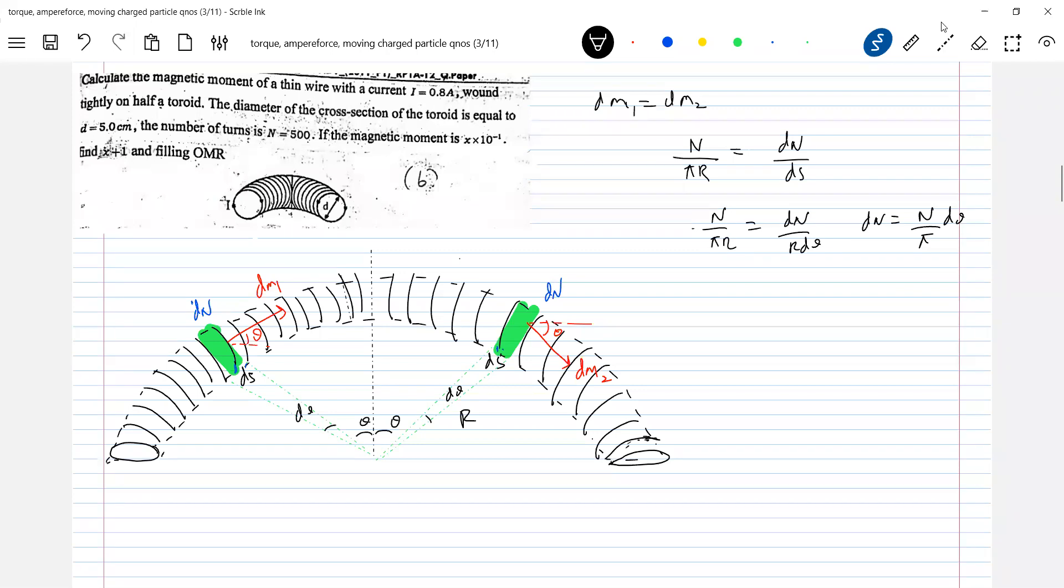So now let's come for the dipole moment. What is the individual dipole moment? Number of turns dN, current is equal to I, times pi A square. What is A? A equals d by 2. The diameter is given d.